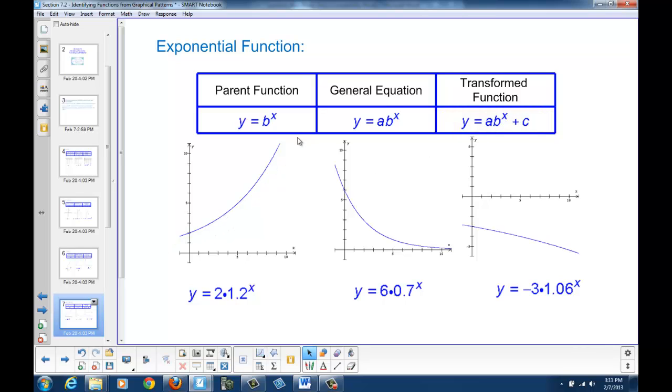Our basic graph increases just like the power function when b is greater than 0. And it's concave up, but the graph doesn't go through the origin. In fact, the graph is going to go through either 1 if the graph hasn't been dilated, or through a here if the graph has been dilated.